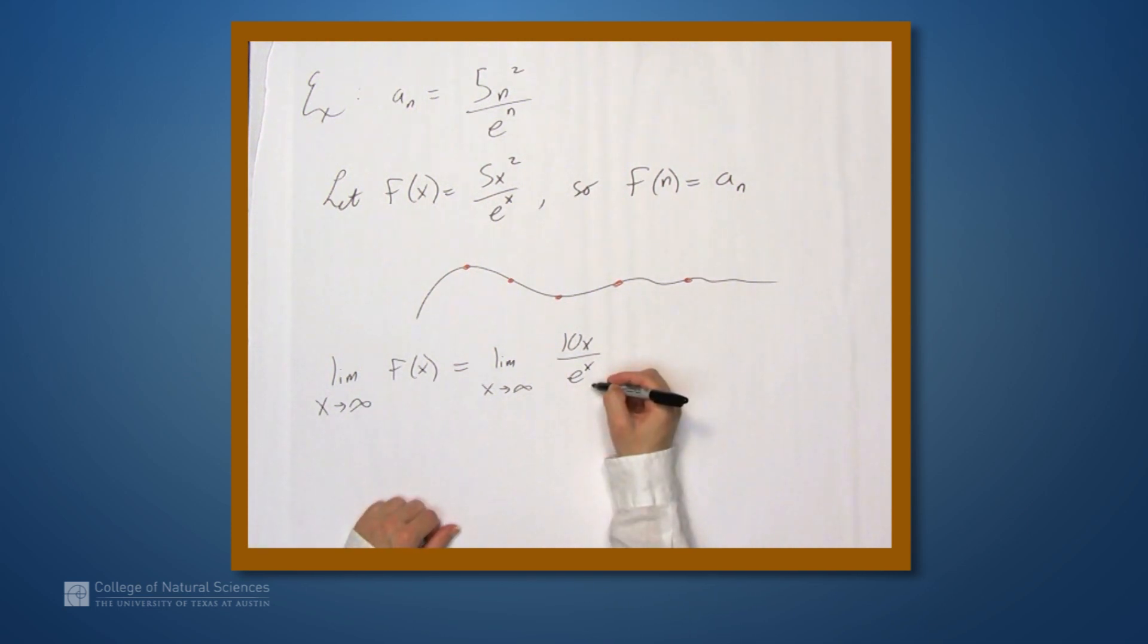Once again, we have a situation where the top and bottom are both going to infinity. So this is the limit as x approaches infinity of 10 over e to the x. And that limit is zero.